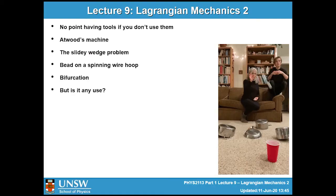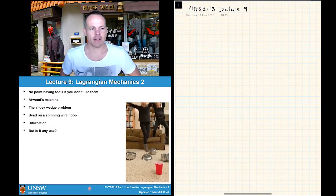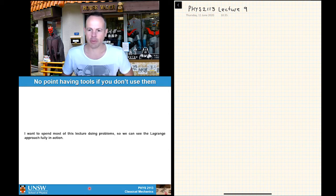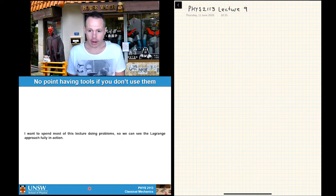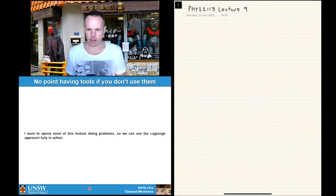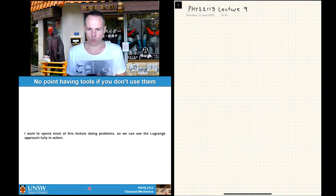Lecture nine is entirely about examples. We've just spent a whole pile of lectures building up Lagrangian mechanics and used it on some rather trivial problems — that doesn't really point to the power of the approach. Today I want to spend the entire class doing problems. I'm going to do three: two in the first half and one in the second half, going up in difficulty.